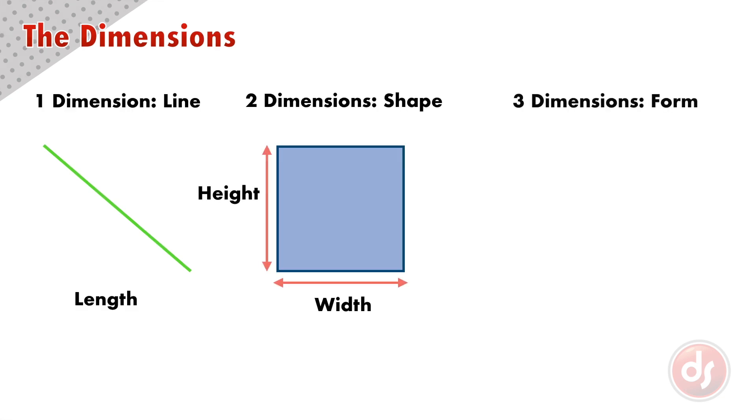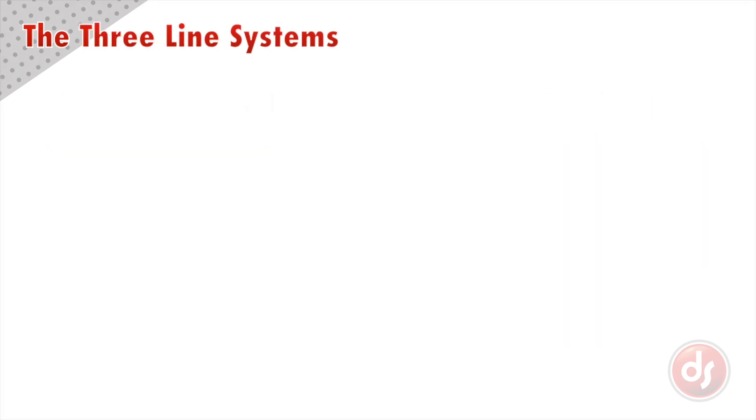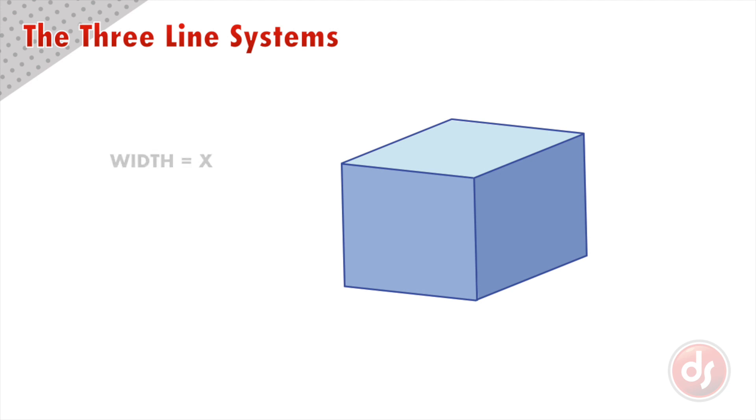A shape that has thickness in space becomes a form and it has three dimensions: width, height, and depth. We call the three dimensions our line systems. Width is always represented by the letter X. Height is always represented by the letter Y and depth is always represented by the letter Z.